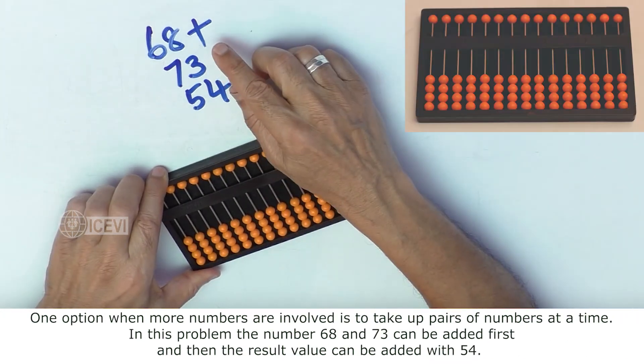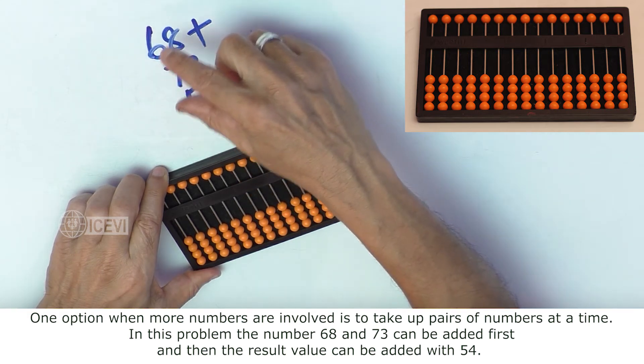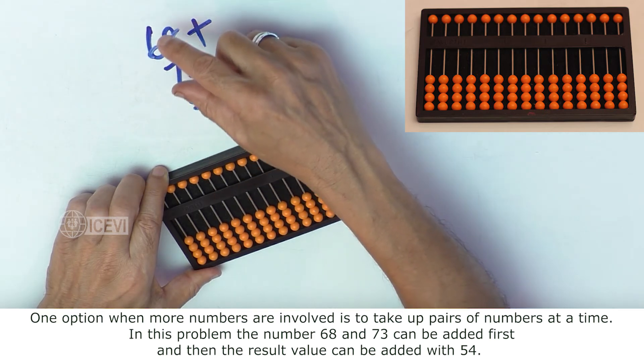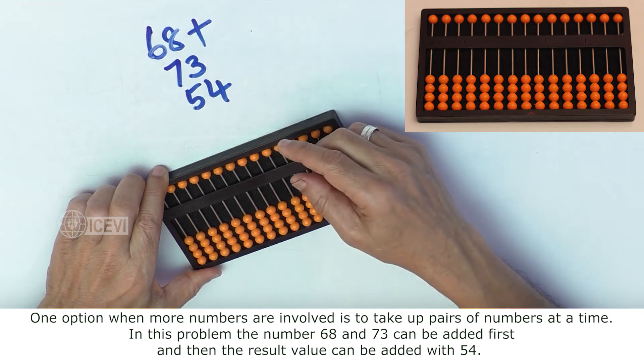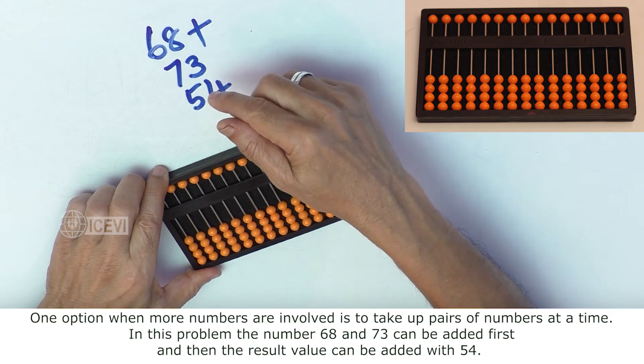One option when more numbers are involved is to take up pairs of numbers at a time. In this problem, the numbers 68 and 73 can be added first, and then the result value can be added with 54.